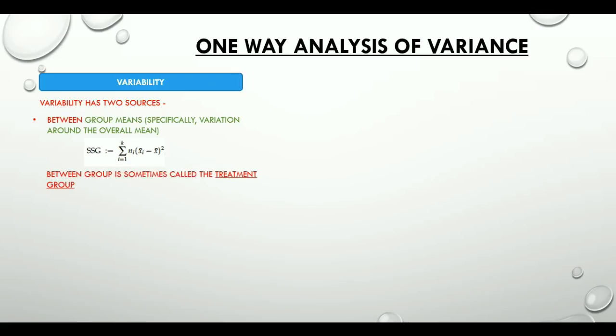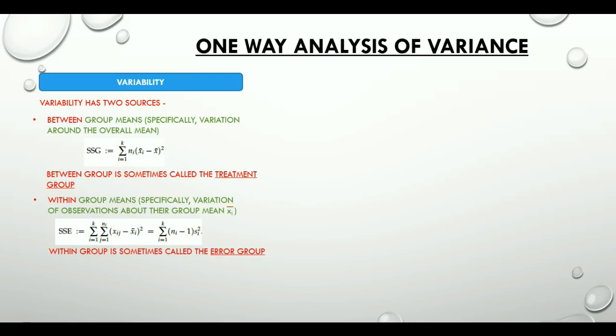Second source is within group, specifically variation of observations about the group mean, sometimes called the error group. Sum of these two gives the total sum of squares.